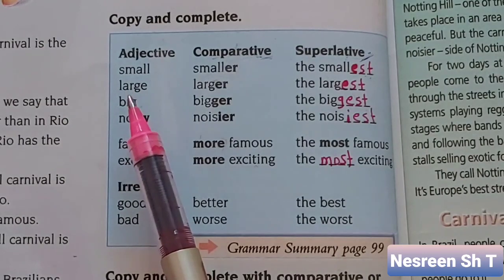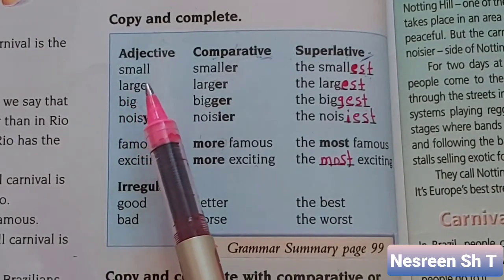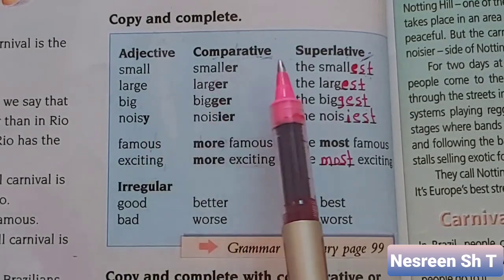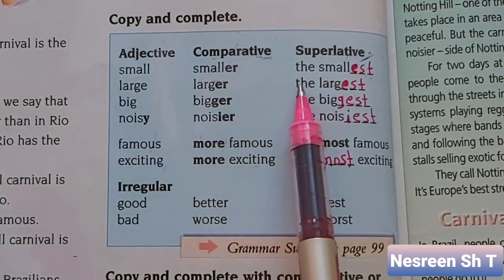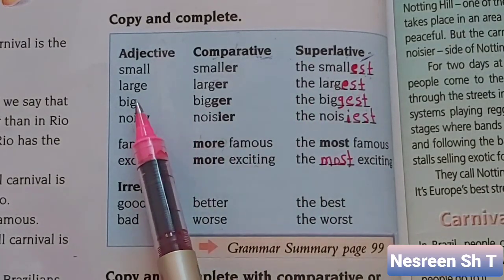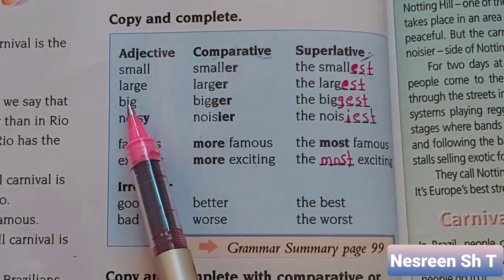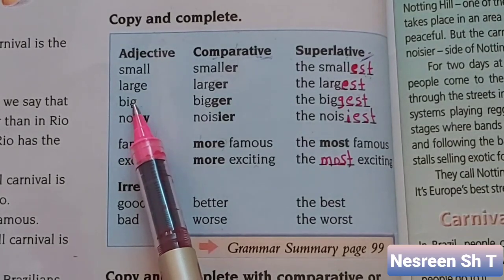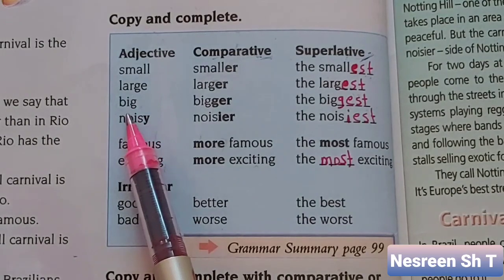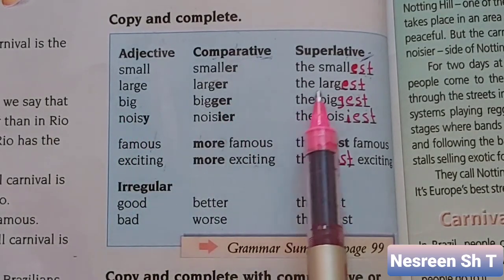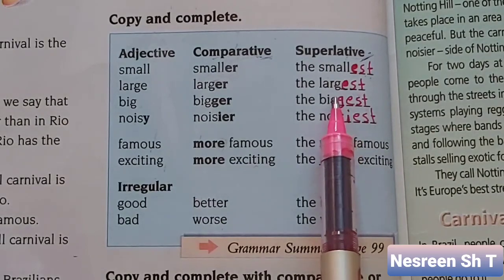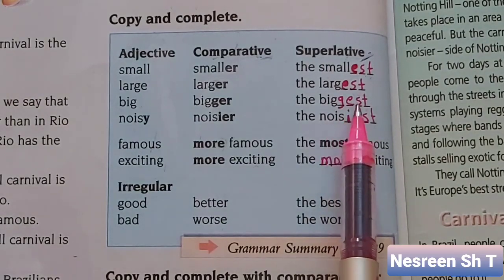Large — large is a short adjective ending with e, so we just add -st. Large becomes the largest. Big — big is a short adjective ending with one vowel plus consonant, so we double the consonant and then add -est. Big becomes the biggest.